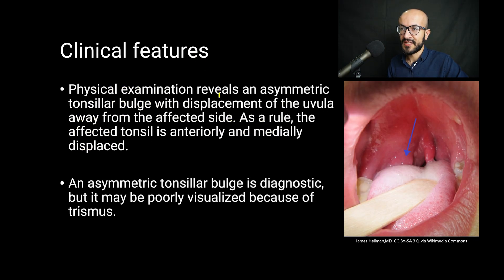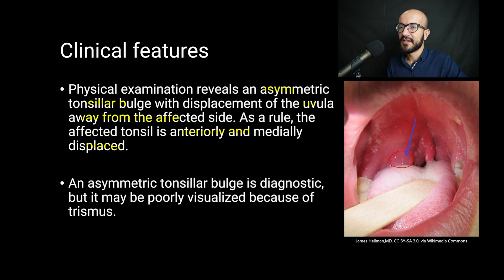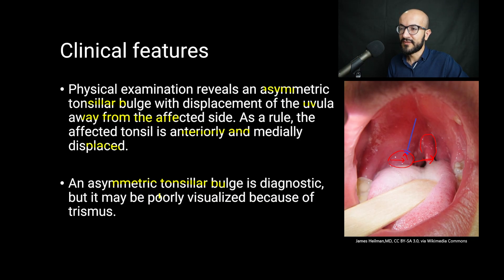Physical examination reveals an asymmetric tonsillar bulge with displacement of the uvula away from the affected side. As a rule, the affected tonsil is anteriorly and medially displaced. The uvula is displaced away from the affected side, and an asymmetric tonsillar bulge is diagnostic of peritonsillar abscess, but it may be poorly visualized because some patients can't open their mouth, making this finding hard to detect.